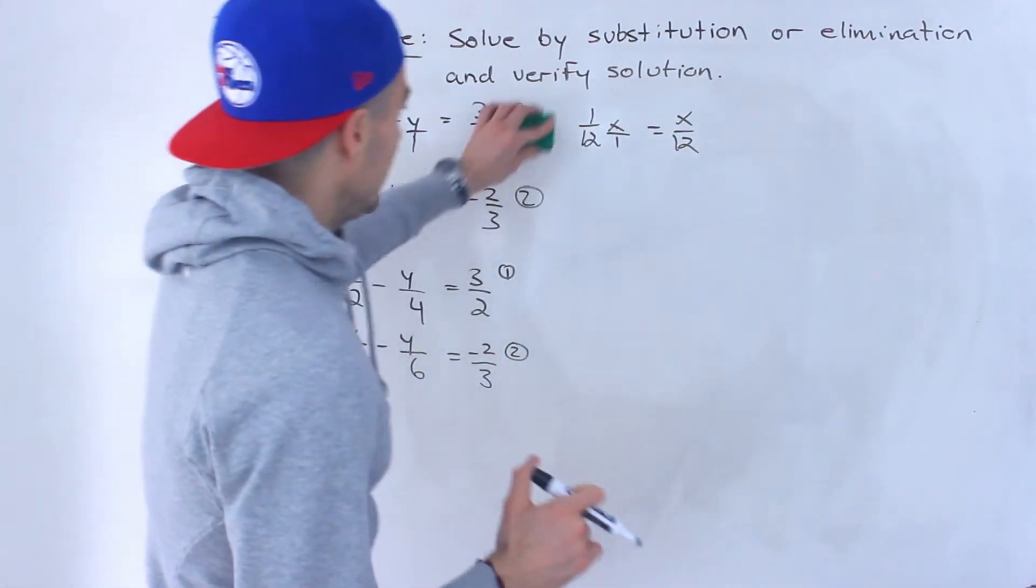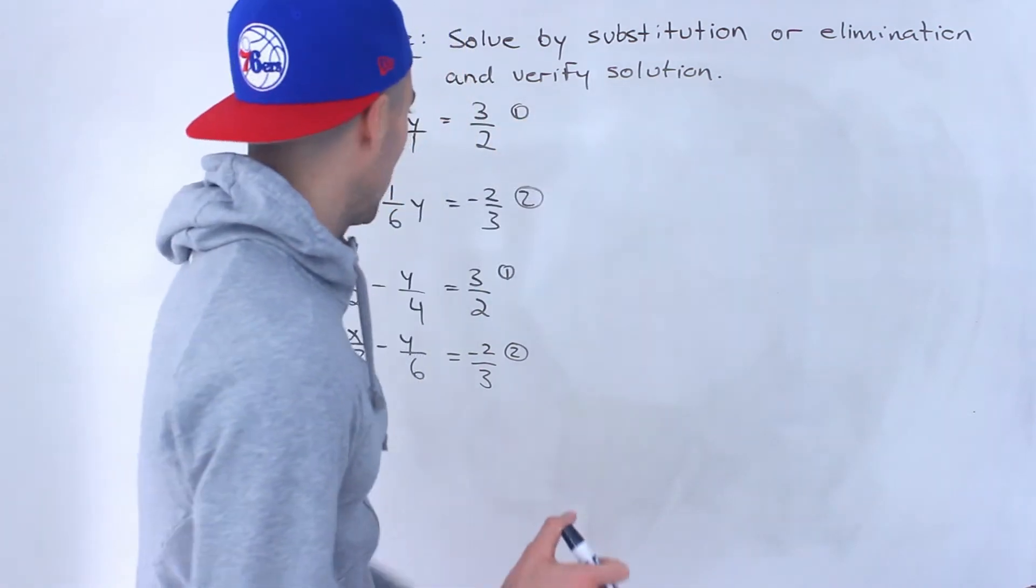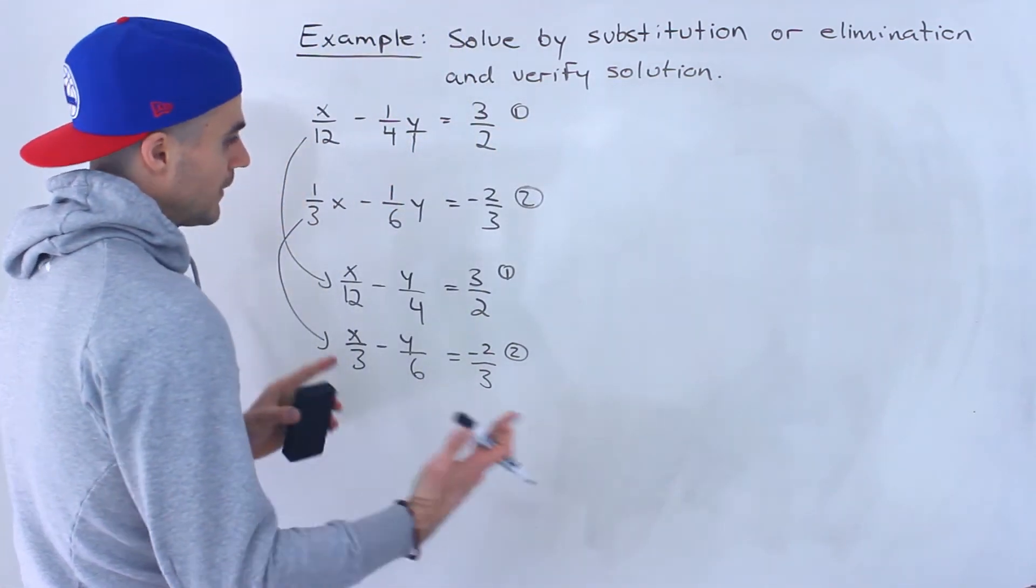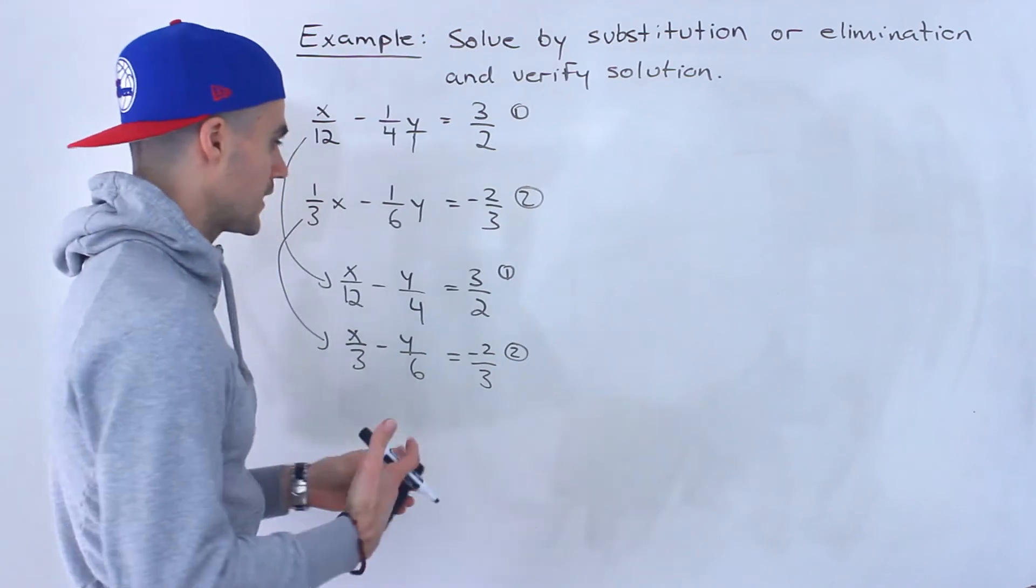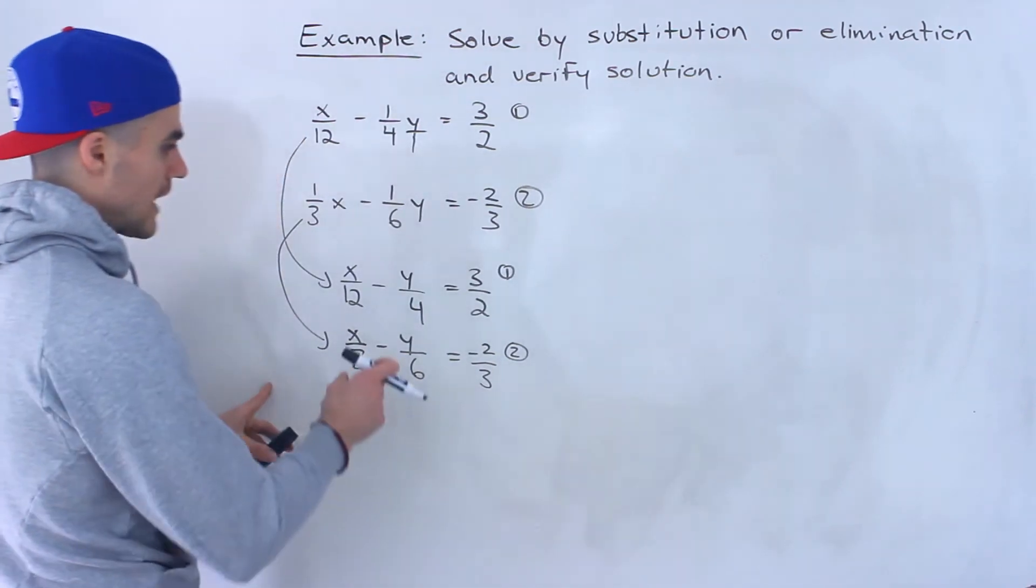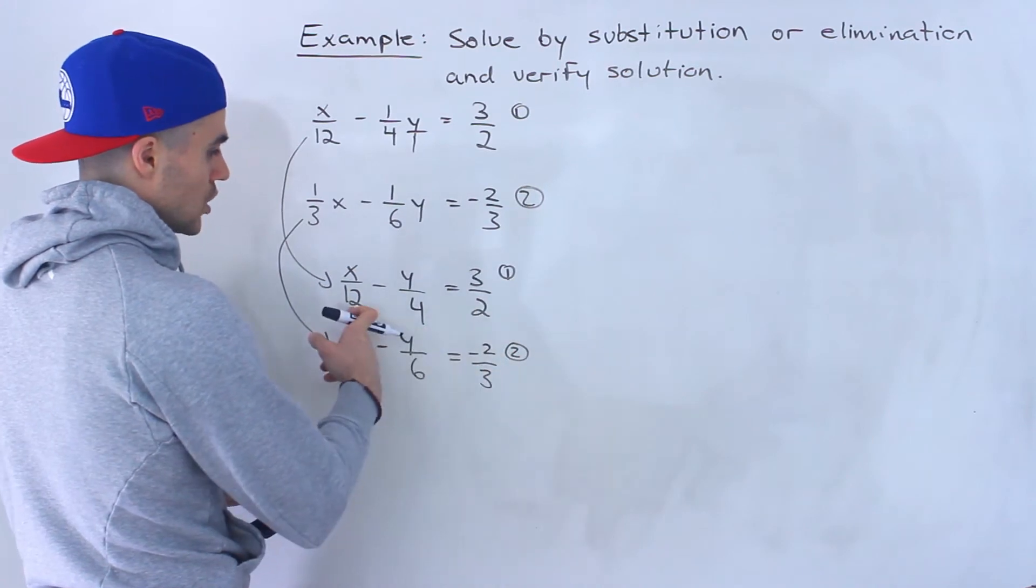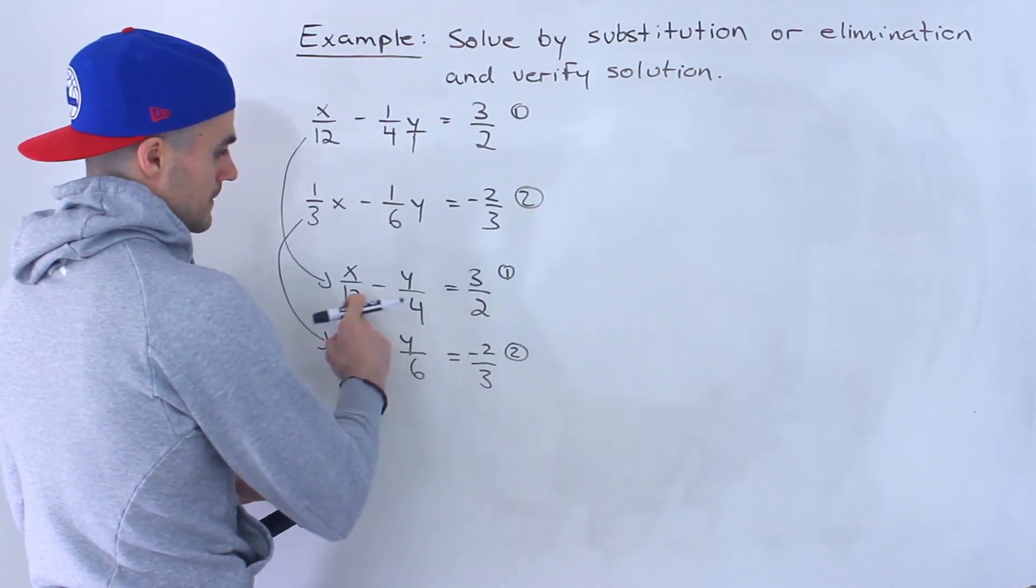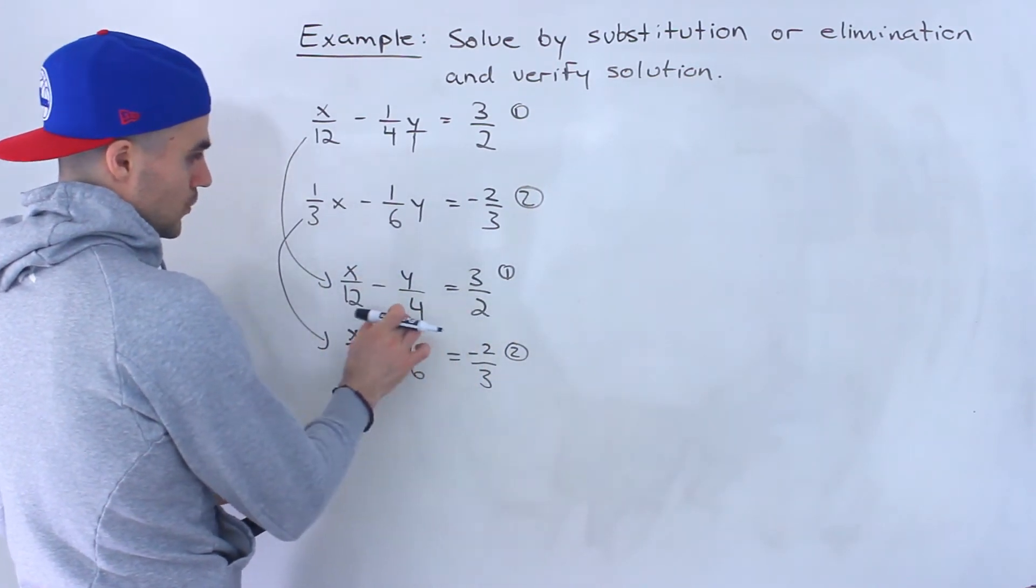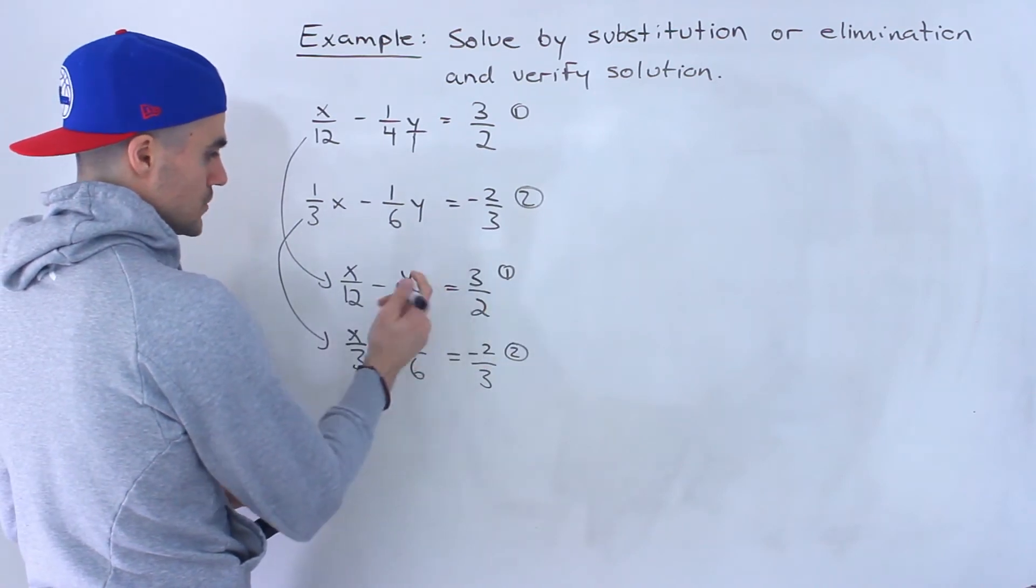So next thing I like to do when I have fractions is I want to get rid of the denominators if possible. And the way you do that is you got to take each expression and multiply it by the lowest common denominator which 12, 4, and 2. Notice it would be 12.